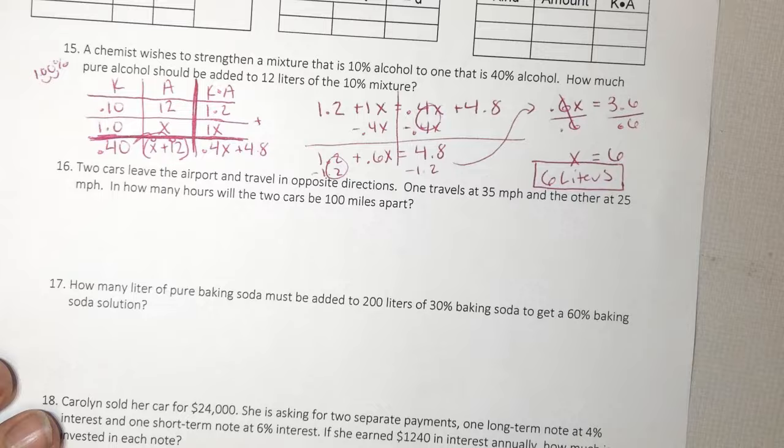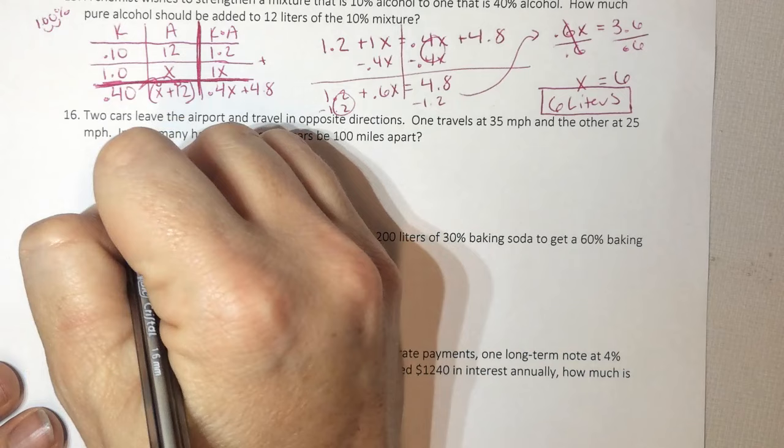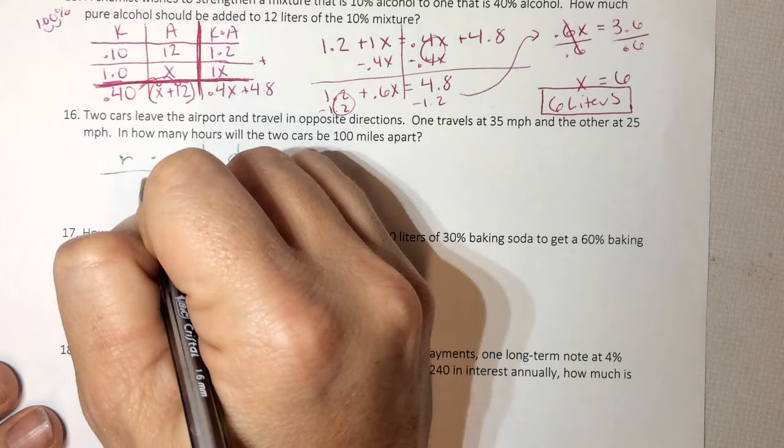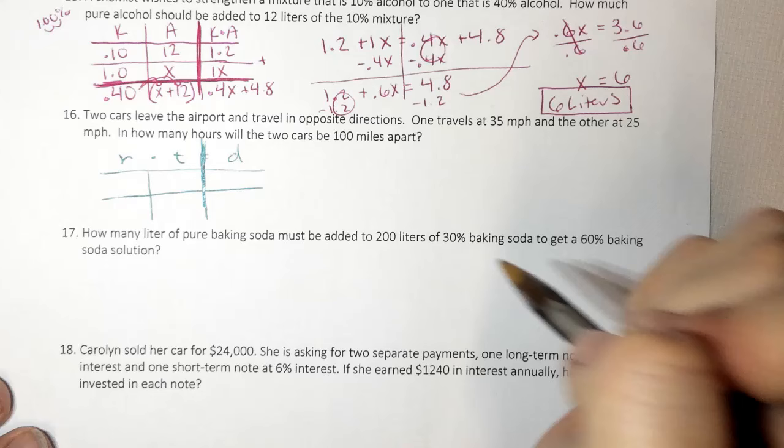Let's look at number 16. It says 2 cars leave an airport. Right away, I know it's cars moving. It's going to be motion. Rate times time equals distance. Remember, we don't ever plug anything in here. This is multiplying r times t. And then I use whatever distance it gives me to help solve. So it says 2 cars leave the airport and travel in opposite directions.